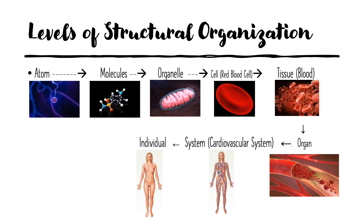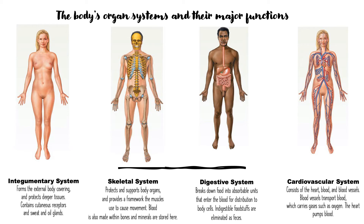When you have a whole bunch of organs — the heart, blood, and blood vessels — you have a system, like the cardiovascular system. When all the systems come together, you get an individual. We have 11 systems that all have to work together. If one or two systems are not working properly, the person will be ill and we say there is a disease.